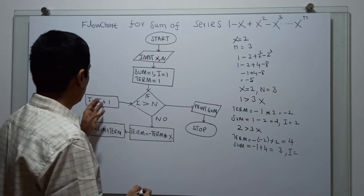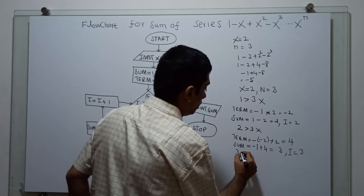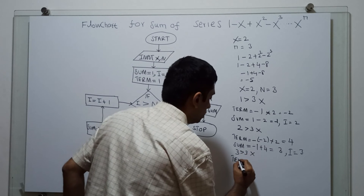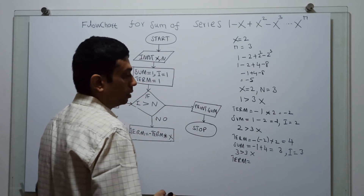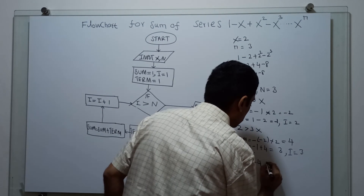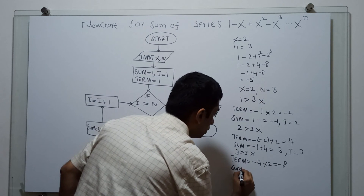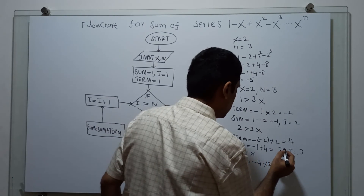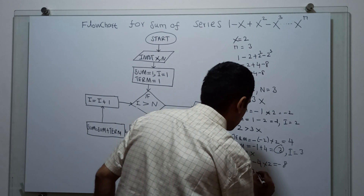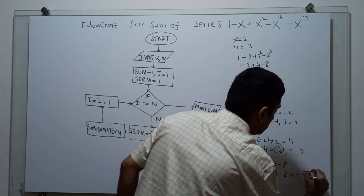I am increasing i by 1, so i equals 3. Checking: 3 greater than 3 is also false. Term: existing value is 4, so minus 4 into 2 equals minus 8. Sum: existing value is 3, so 3 plus minus 8 gives 3 minus 8 equal to minus 5.